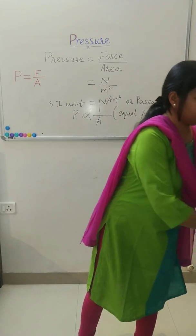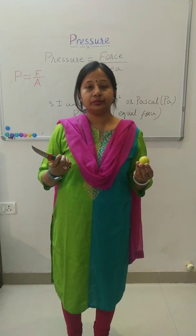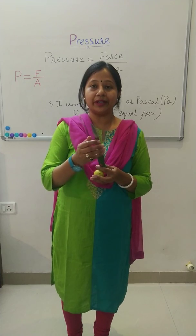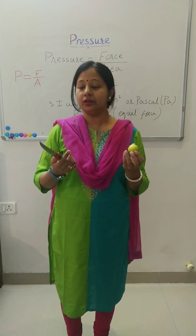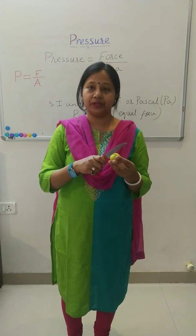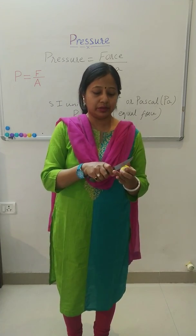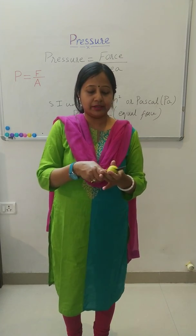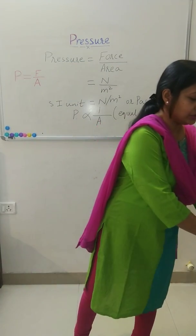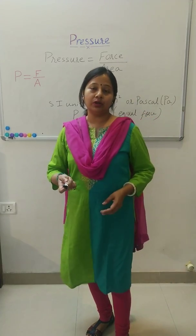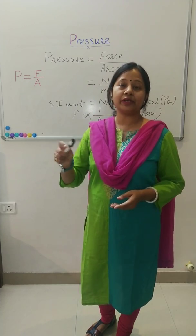We take a lemon and a knife. A knife has two ends — one end is sharp and another end is blunt. Let us try to cut the lemon with the blunt end. It is difficult. Now let us try with the sharp end. Yes, it is easy. So can we say that when area is small, with the application of the same amount of force, it applies greater pressure on the object?